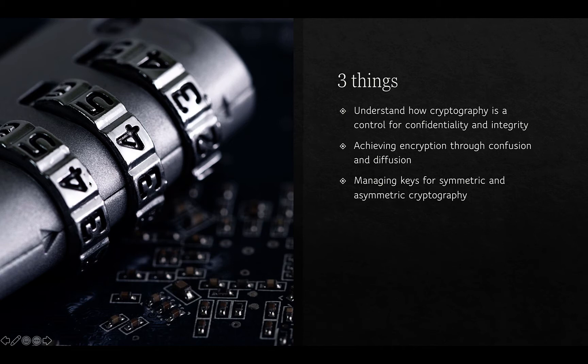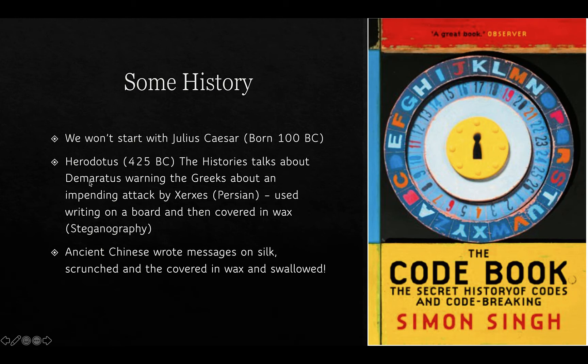The three things we want you to take away from these videos are: first, understanding how cryptography is a control for confidentiality and integrity; second, how encryption relies on the concepts of confusion and diffusion; and finally, looking at modern ciphers — symmetric and asymmetric cryptography — and the problem of key management.